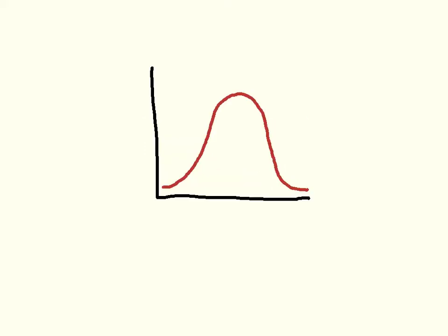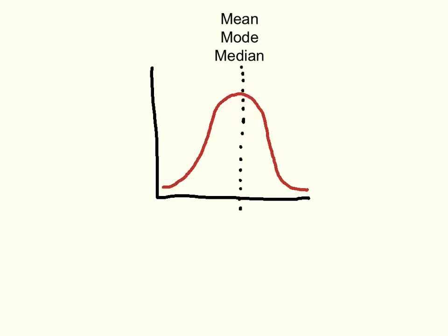So far we've talked about frequency distributions, which represent sets of data, and we've talked about measures of central tendency, which characterize the central point of a set of data. Here's a normal distribution — we've looked at other skewed distributions, but right now we're just going to talk about a normal distribution. All three measures of central tendency — the mean, the mode, and the median — are at the center of a normal distribution.